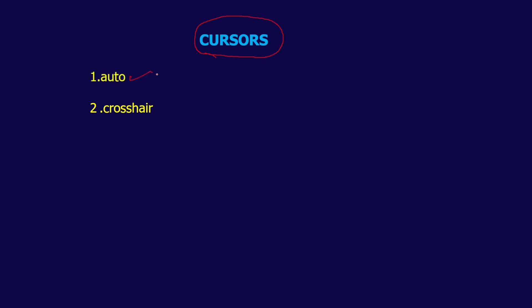So now what are the types of cursors that you have in CSS? The first one is the auto cursor — that is, whatever is automatically available will be the auto cursor. Then next is the crosshair, which will be like a plus mark. The second one is the default cursor. The third one is the pointer, which comes in a hand shape.